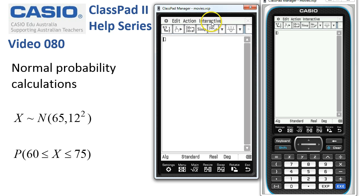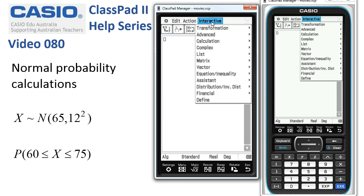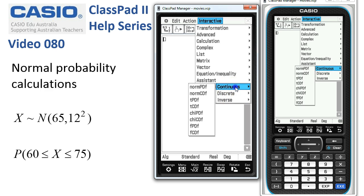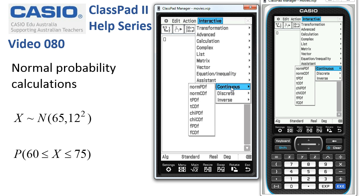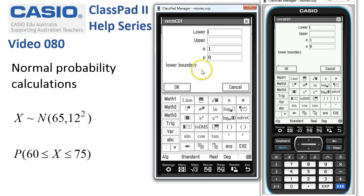Now normal distributions or all probability distributions live under the interactive distribution and then there's either continuous, discrete, or the inverse functions. The one we're after today is the norm CDF. So here it is and when we release the mouse then we've got the template ready to go.